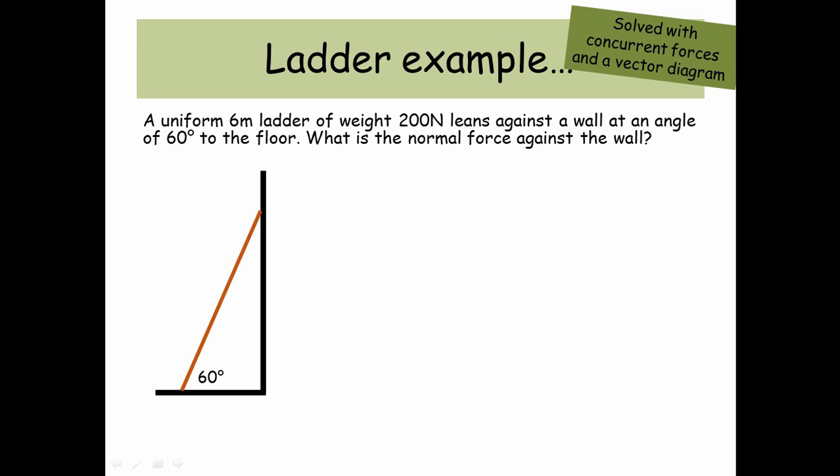So it's 60 degrees, the ladder. Now, it's a uniform ladder, so the center of mass is going to be in the middle, and that's going to have a force of 200 newtons. That's the weight of the ladder. There's going to be a normal force acting on the ladder from the wall, and we don't know the value of that force, but we would like to find it out.